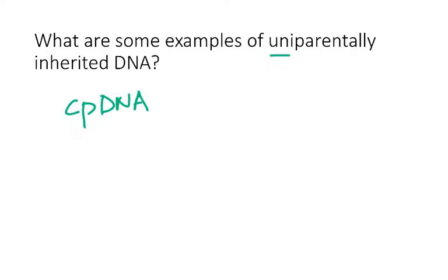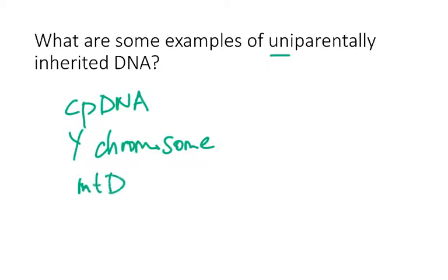We talked about the Y chromosome — that example with the Isle of Breal wolves and how the Y chromosome can be used to track paternal inheritance because it's only inherited from the father. And then the other type we talked about is mitochondrial DNA, which is the one we're going to focus on most in this video because we're going to see it a lot this semester, and because many molecular ecology studies use mitochondrial DNA.